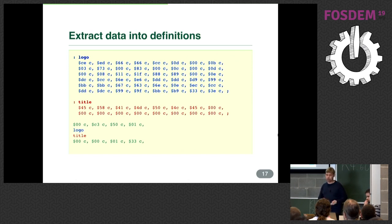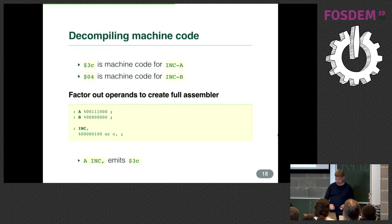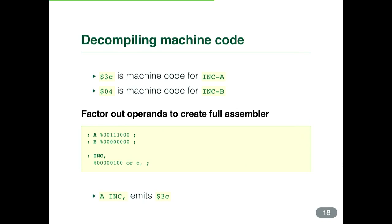We keep repeating this for the rest of the program. At some point all the raw data is extracted — flags indicating whether it's a Color Game Boy game, the title fields, etc. Then we're left with bytes we haven't translated yet: that's the program itself. We reference the CPU manual to find that certain numbers are opcodes — for example, hexadecimal 3C translates to 'increment A', and 04 translates to 'increment B'.